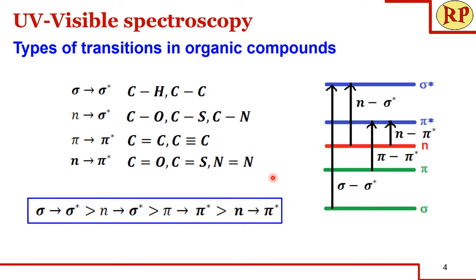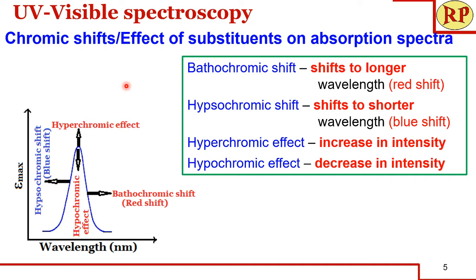We'll understand the different types of chromic shifts — that is, the effect of substituents. When an auxochrome is present along with the chromophore, what will happen? This is the absorption spectra of UV-visible spectroscopy, with epsilon max on the y-axis and wavelength on the x-axis. When the absorption band shifts to longer wavelength we call it a bathochromic shift or red shift; when it shifts to shorter wavelength, a hypsochromic shift or blue shift. When intensity increases it is the hyperchromic effect; when it decreases, the hypochromic effect. Usually bathochromic shift is accompanied by hyperchromic effect, and hypochromic effect is accompanied by hypsochromic shift.